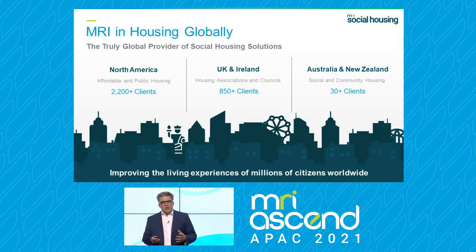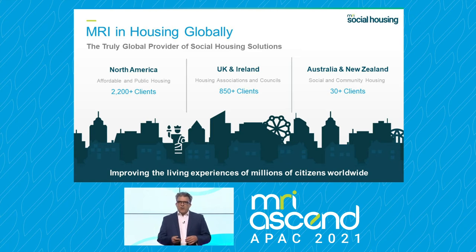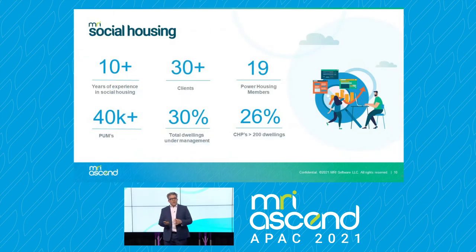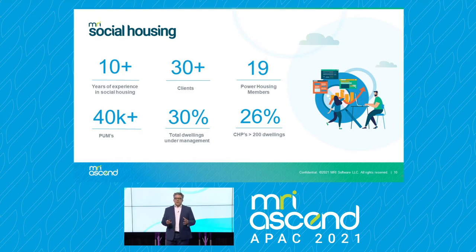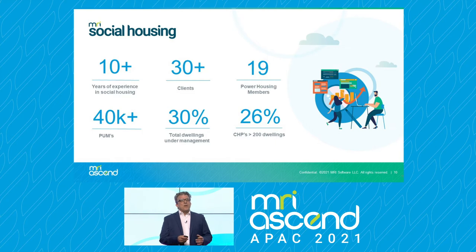So where does social housing fit into the scheme of things with MRI? While MRI has had a long history in affordable and public housing in the US dating back to its inception, the recent acquisitions of Orchard Housing, Castleton Technology and Housing Partners has expanded the scope of MRI's social housing client base to include the UK, Ireland and importantly New Zealand and Australia. From an Australian perspective, we've been working here for the last 10 years, implementing with 30-plus clients who represent 19 of the power housing members, with 40,000 properties under management — representing 30% of total dwellings under management within the sector, and 26% of CHPs with 200-plus dwellings.